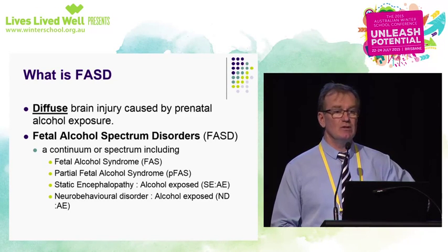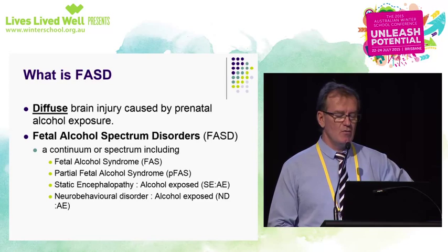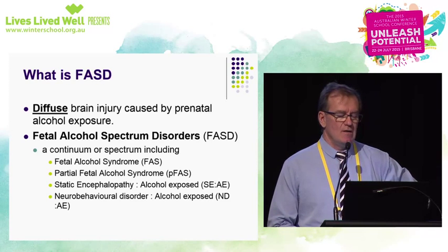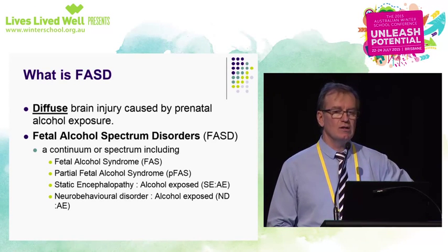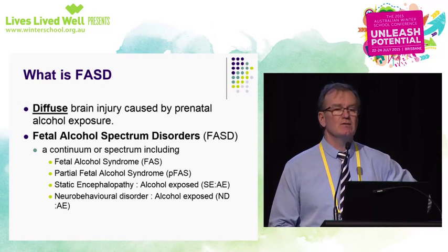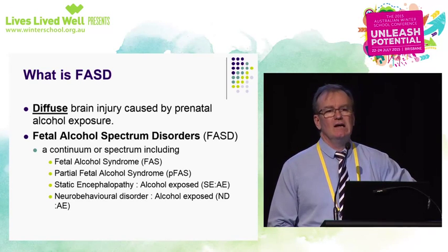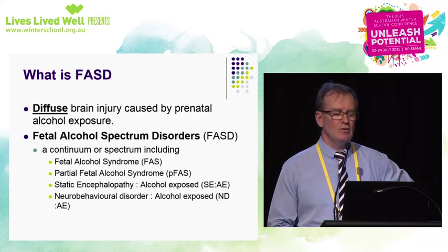Like many other spectrum disorders, it is a spectrum. It goes from severe — so the severe end of the spectrum is fetal alcohol syndrome, where people do look different — but right down to what's called neurobehavioural disorder, or the Australian terminology is neurodevelopmental disorder, alcohol exposed, where children look just like everybody else, but their brain doesn't work in the same way. Often we base our expectations for behaviour and ability on how tall someone is, how old they are, and to a certain extent what sort of language they use.